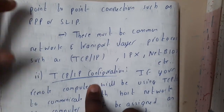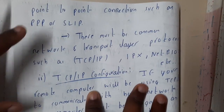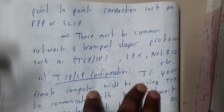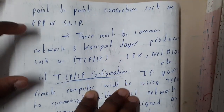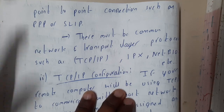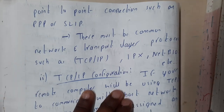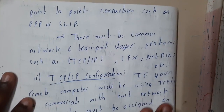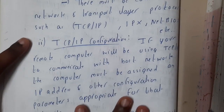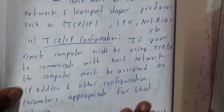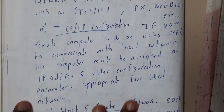There must also be a common network and transport protocol. Not only at the data link layer, but we also need the same protocols at the network layer and transport layer. The popular choices would be TCP/IP or UDP, and those can be used for both systems.